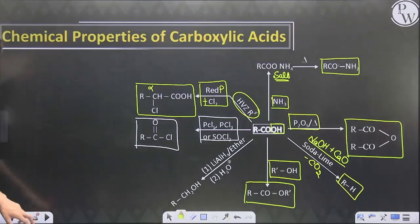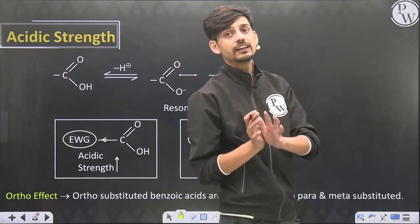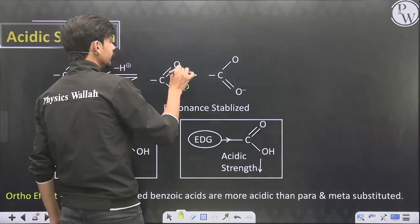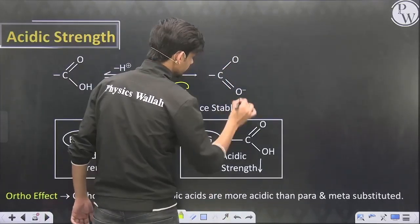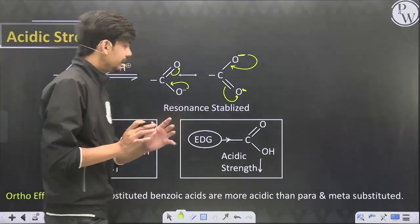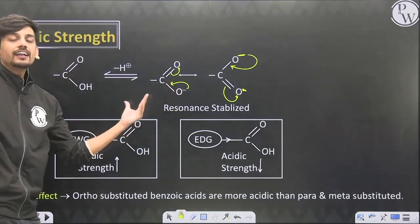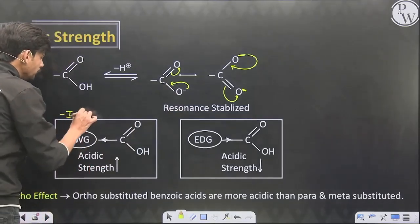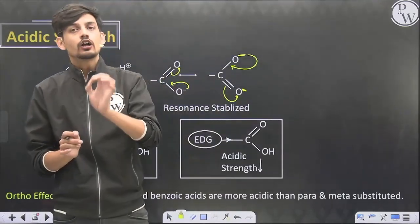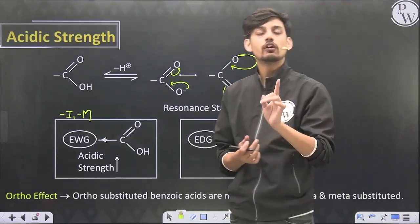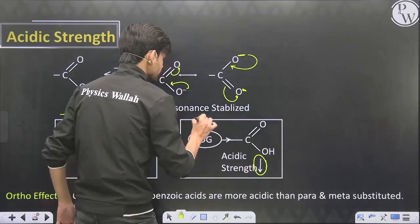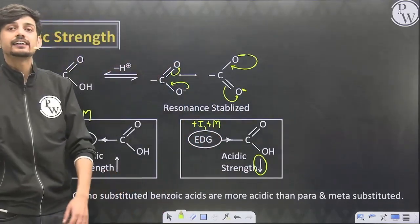Now let's understand acidic strength — many exam questions have come from this topic. Acidic strength is determined by the stability of the conjugate base (carboxylate ion), which is resonance-stabilized. Resonance is common for both aromatic and aliphatic carboxylic acids. What differentiates them is that in the presence of an electron-withdrawing group (–I or –M effect), the negative charge is withdrawn and extra stability is provided, increasing acidic strength. So chloroacetic acid is more acidic than acetic acid because of the –I chlorine group. Electron-donating groups (+I or +M) decrease acidic strength.